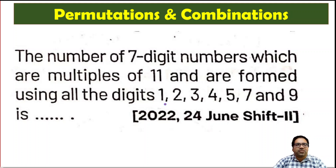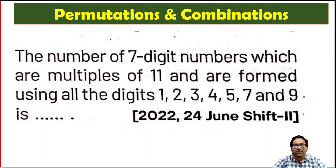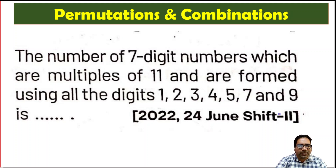Now, the sum of all of these digits: 1 plus 2 plus 3 plus 4 is 10, plus 5 is 15, plus 7 is 22, plus 9 is equal to 31.